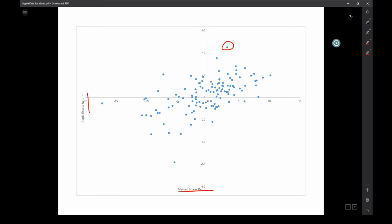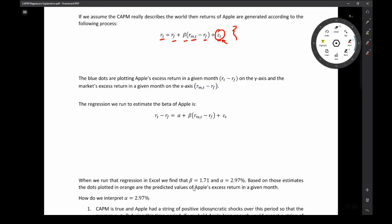So in this month, whatever it was, there was a good piece of news that resulted in Apple stock being particularly high. Conversely down here, there was a bad piece of news or likely a bad piece of news. But each one of these blue dots is a particular return in a particular month. So in that formula, each blue dot would be a return with a subscript T.